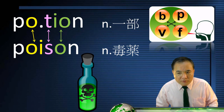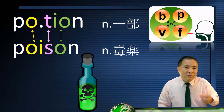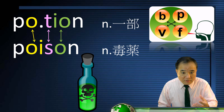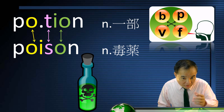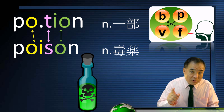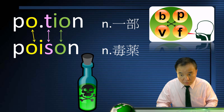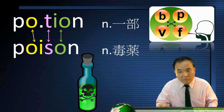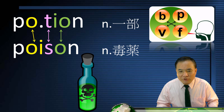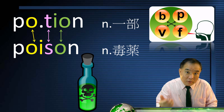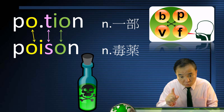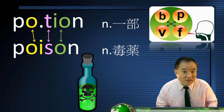From potion, we get poison. Poison is also a potion of medicine, but it would take away your life, not save you. The T in potion changes to S in poison, and the O-I in poison actually comes from the O in potion. S and T are interchangeable — this rule will be discussed later.